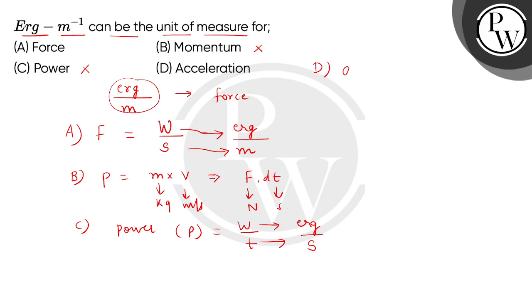And in option D, we have the acceleration, which is the rate of change of velocity. So if we get the CGS unit of velocity, we will get centimeter per second. So this is also not the correct answer, so correct answer will be option A. Thank you.